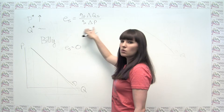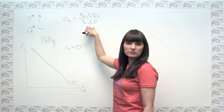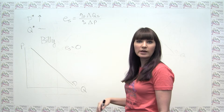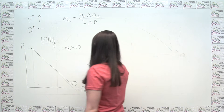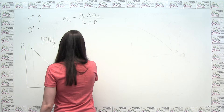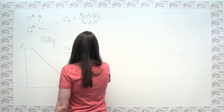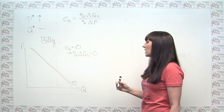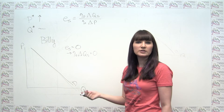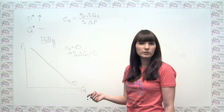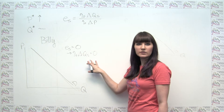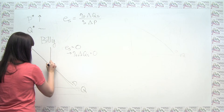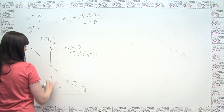If the price elasticity of supply equals zero, that means the percent change in quantity supplied is zero — our quantity supplied never changes regardless of what the price is. Graphically, that looks like a vertical line. So our supply curve is vertical, and you can confirm this makes sense: regardless of what the price is, our quantity supplied is always at the same quantity.